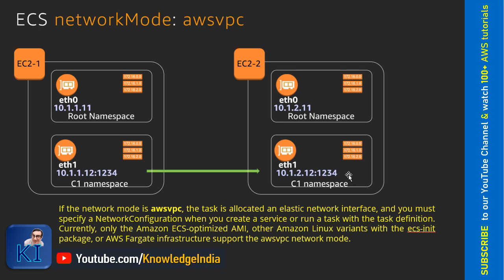If the network mode is AWS VPC, the task is allocated an ENI and you must specify a network configuration when you create a service or run a task with the task definition. If you are using the Amazon ECS Optimized AMI, the latest AMI has the necessary packages to support AWS VPC mode. With Fargate, only AWS VPC mode is supported — not Bridge mode.